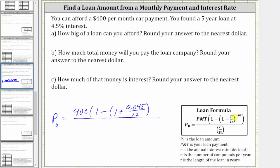This sum is raised to the power of negative N times T, which gives us negative 12 times T, where T is the length of the loan in years. You have a five-year loan, so T is five. Then we have close parenthesis, divided by R divided by N in the denominator, which is 0.045 divided by 12.